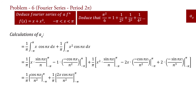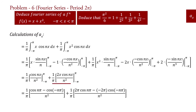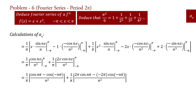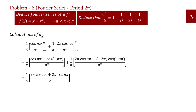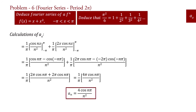Putting the values of limits: cos(−nπ) = cos(nπ), so cos(nπ) − cos(nπ) = 0 for the first term. Therefore, aₙ = (1/π)·4π·cos(nπ)/n², and after π cancellation, aₙ = 4cos(nπ)/n². This is the Fourier coefficient aₙ.